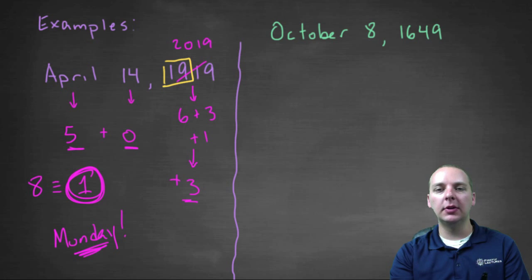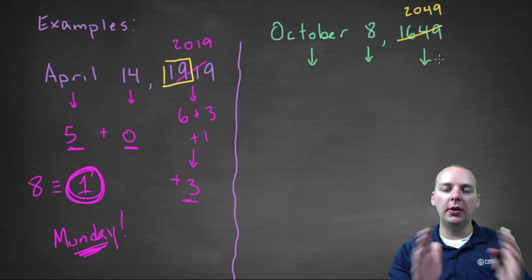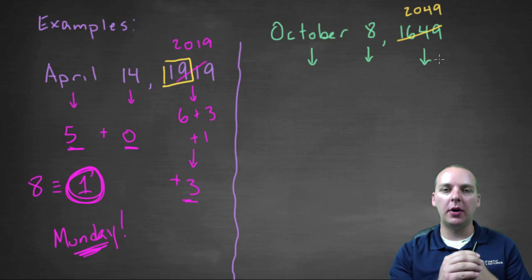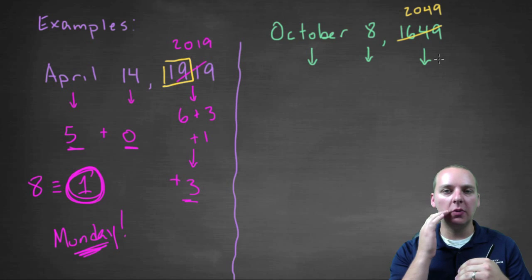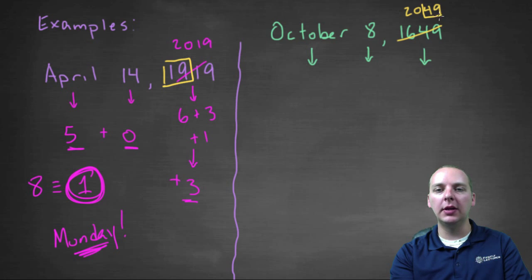Alright, let's do one more. We'll do this one kind of quickly, because speed is also an element of this. You've got to do it kind of fast, and you've got to do a lot of this mental math as well. Okay, so we've got October eighth, sixteen forty-nine. Man, that was a long time ago. So sixteen forty-nine. So I'm going to think of this just temporarily, as two thousand forty-nine for our purposes. Now that's outside of our window zero to twenty-eight, if you remember our year codes from the last video.